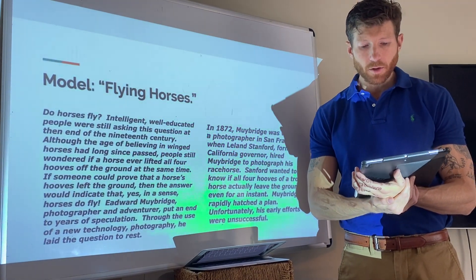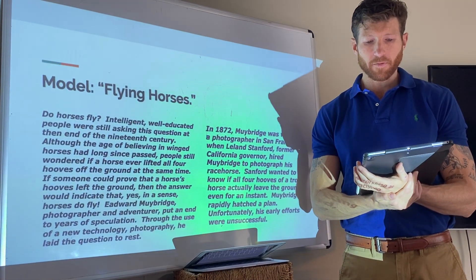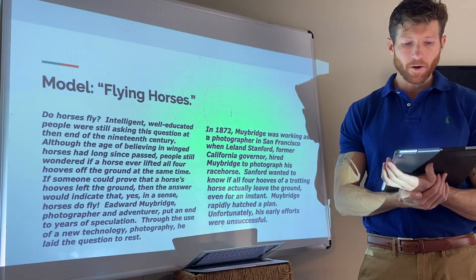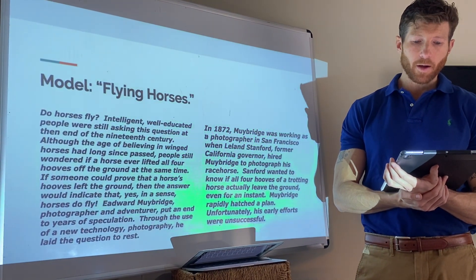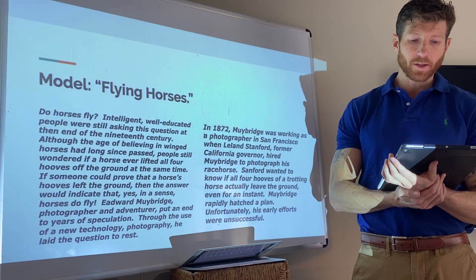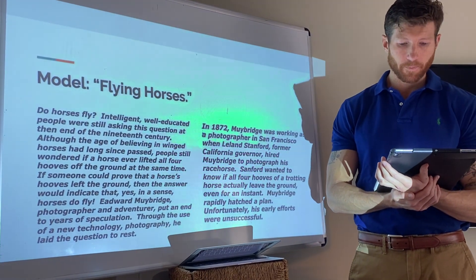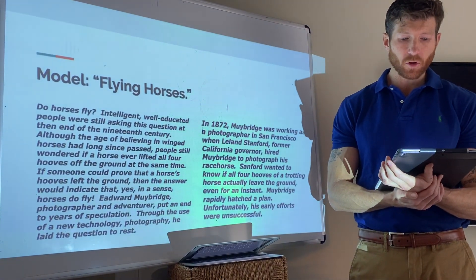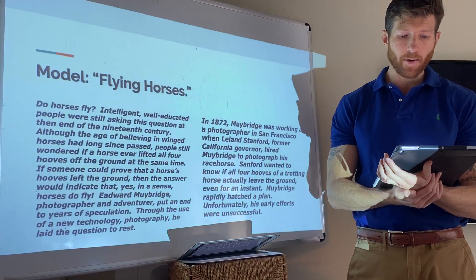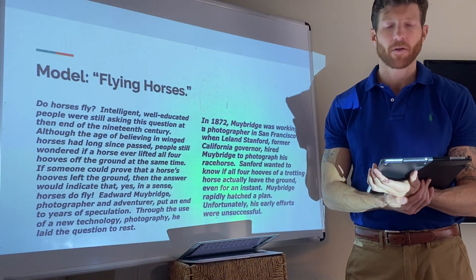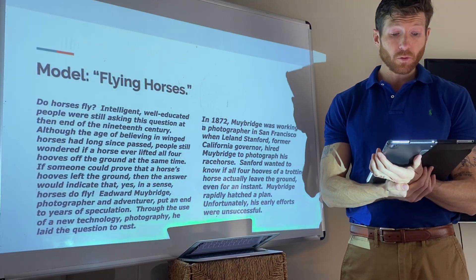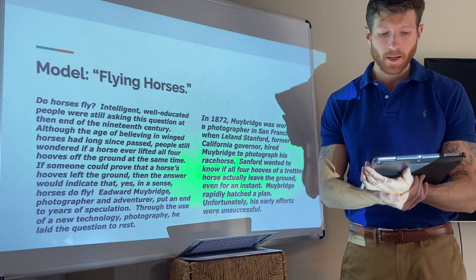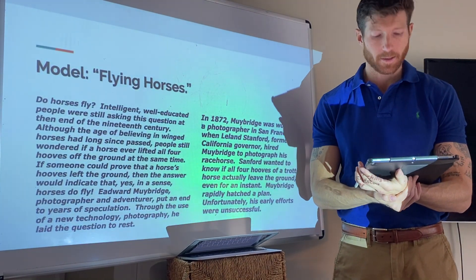In 1872, Muybridge was working as a photographer in San Francisco when Leland Stanford, former California governor, hired Muybridge to photograph his racehorse. Stanford wanted to know if all four hooves of a trotting horse actually leave the ground, even for an instant. Muybridge rapidly hatched a plan. Unfortunately, his early efforts were unsuccessful.